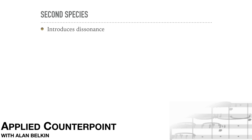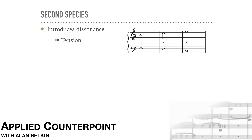Second species now introduces dissonance. Dissonance creates tension. In a context where the normal sounds are thirds, sixths, and fifths, adding seconds, tritones, and sevenths can make the music much richer. If the result is not to sound random, these dissonant intervals need to be used in a coherent way.